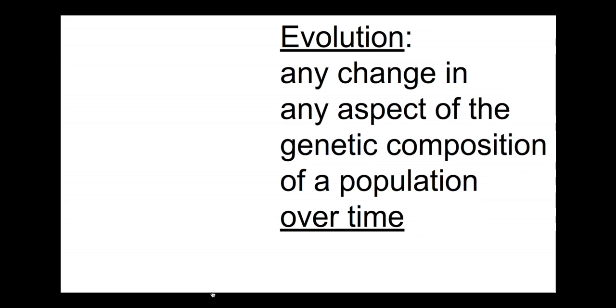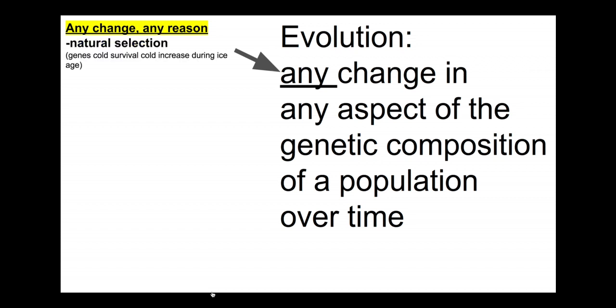We're going to break down each component. First, any change. This really means any change, any at all. Often we first think of natural selection, and people will talk about natural selection and evolution almost interchangeably. Often a lot of the really interesting stuff in evolution is due to natural selection. For example, cold survival genes would increase during an ice age. Genes that facilitate living in hot climates increase when global warming increases. Lots of really interesting things occur due to natural selection.